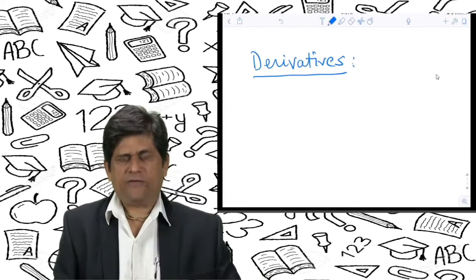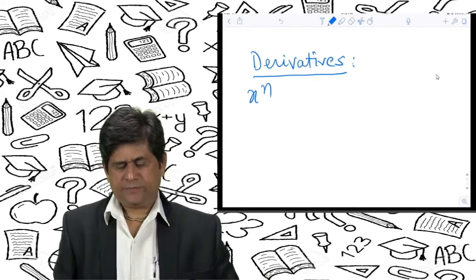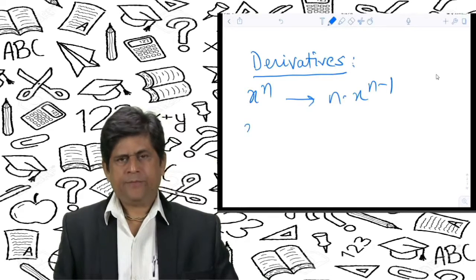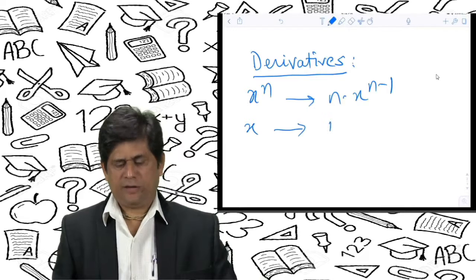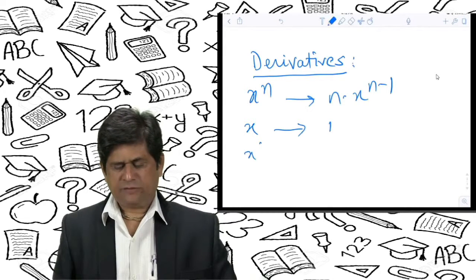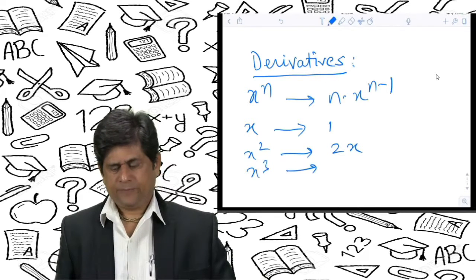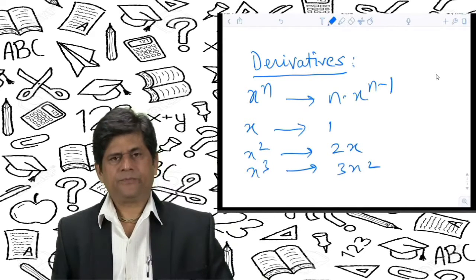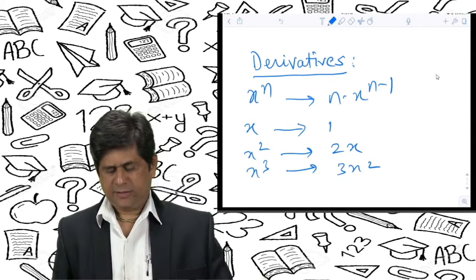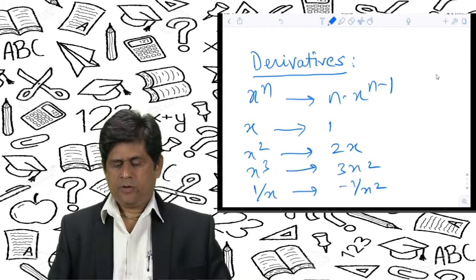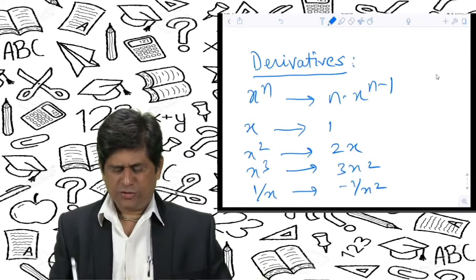First, we take the power function. The derivative of xⁿ is n·xⁿ⁻¹. For example, the derivative of x² is 2x, the derivative of x³ follows similarly, and the derivative of 1/x is −1/x².